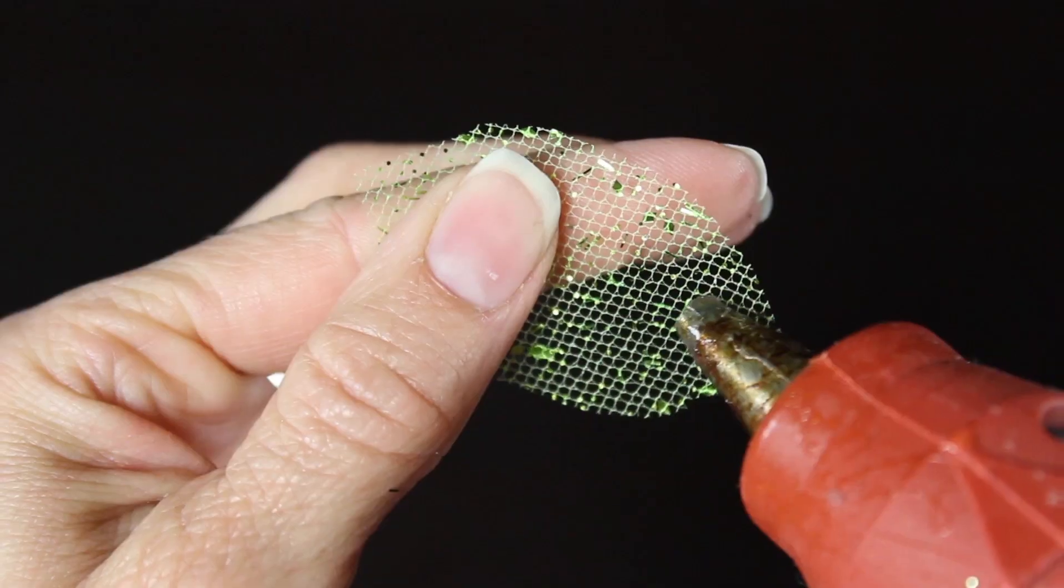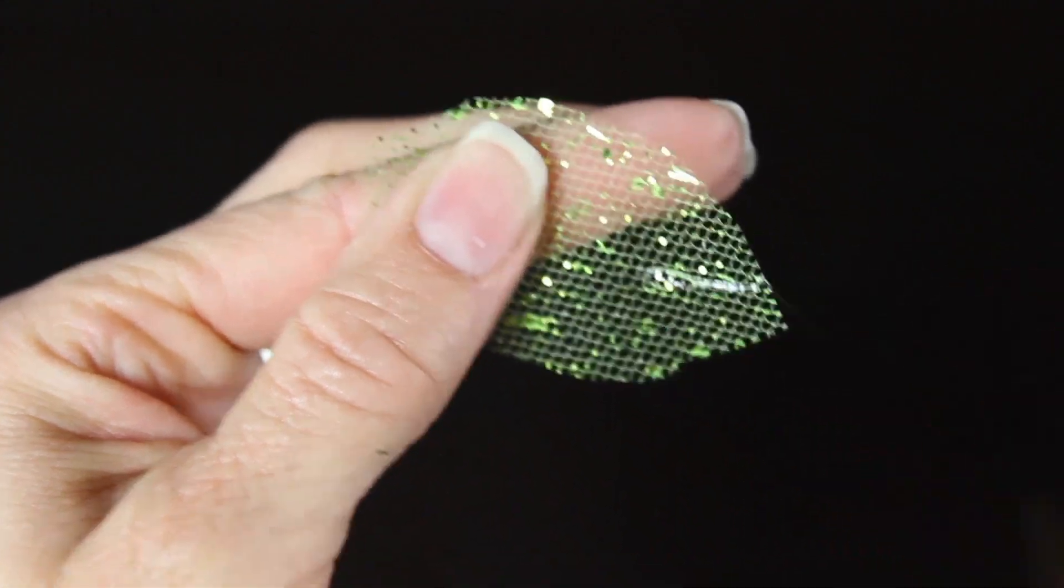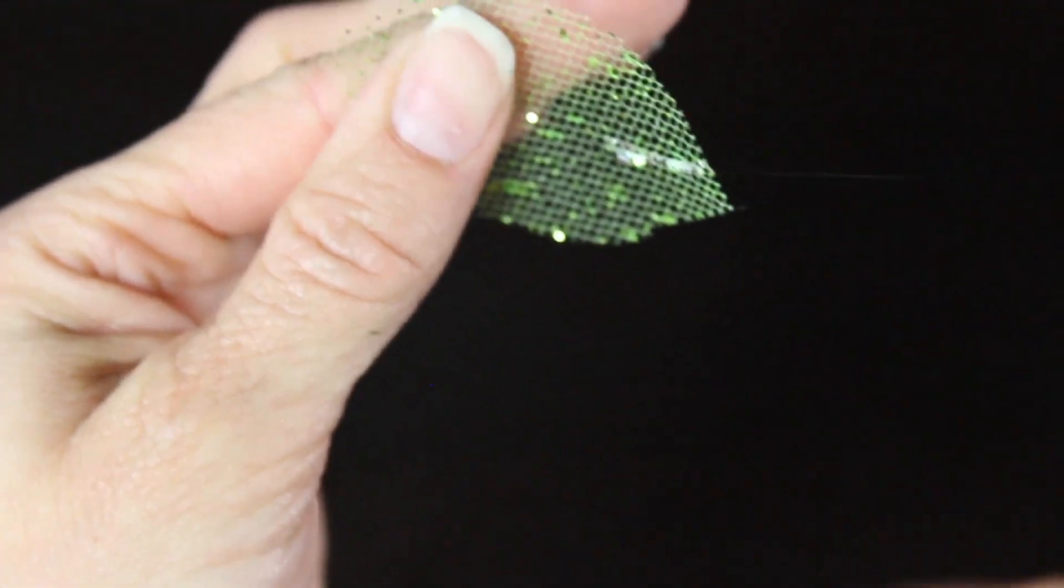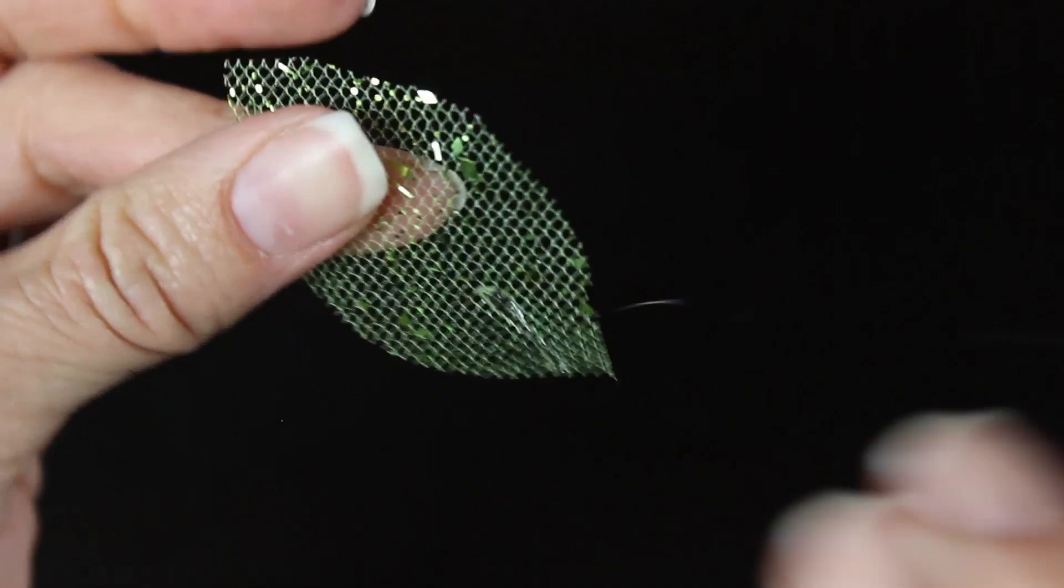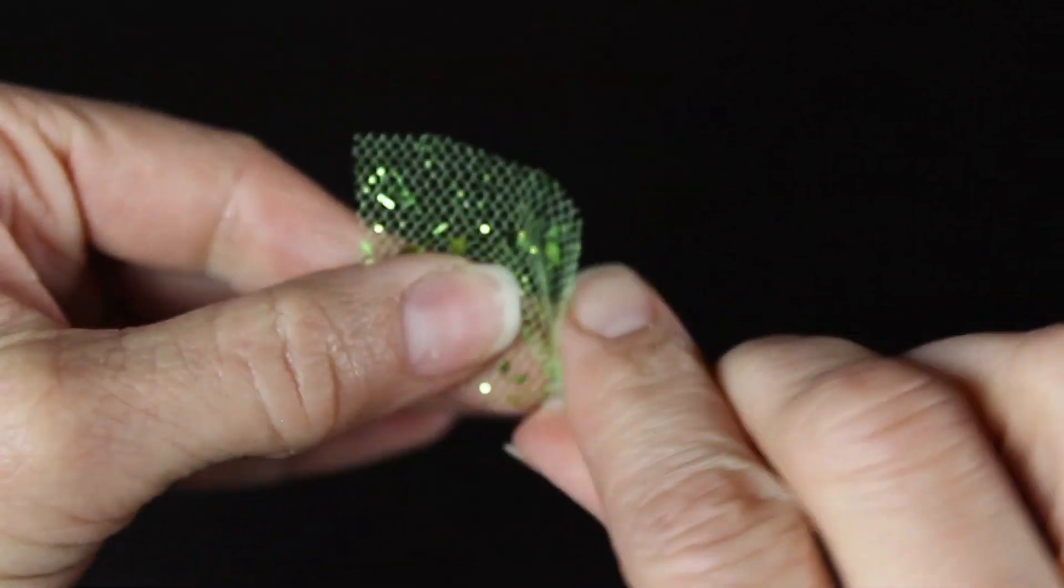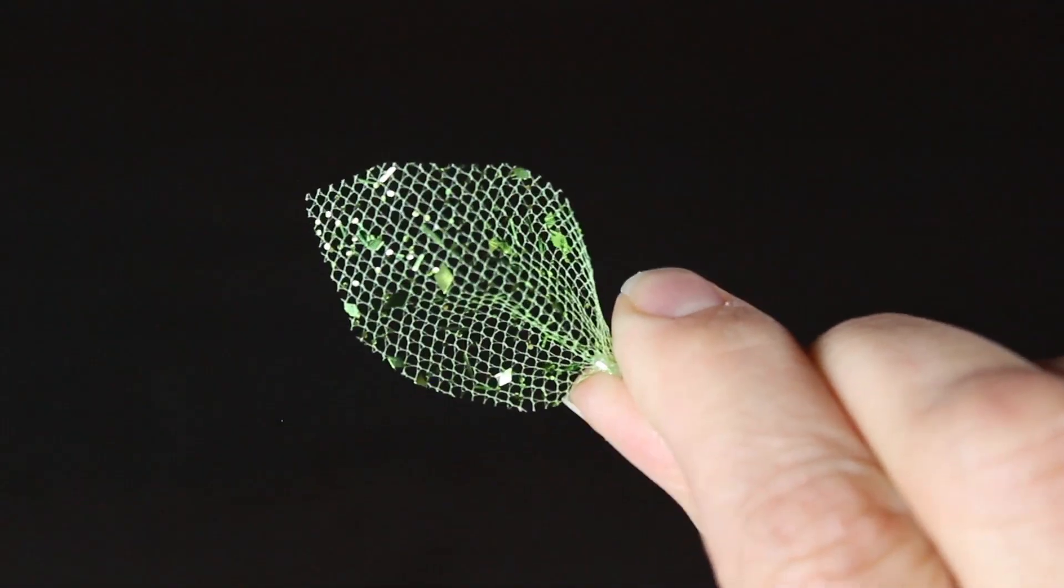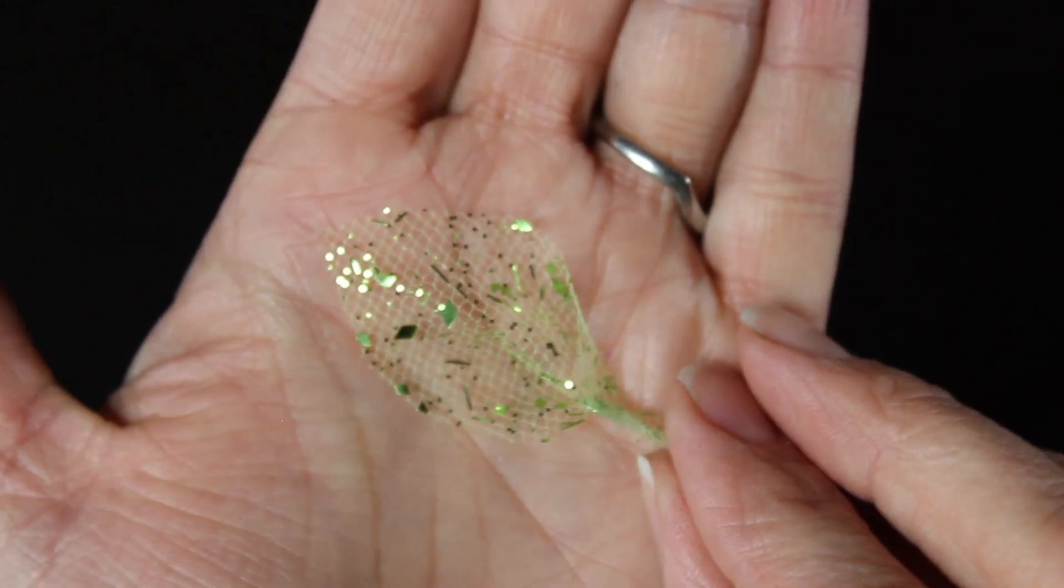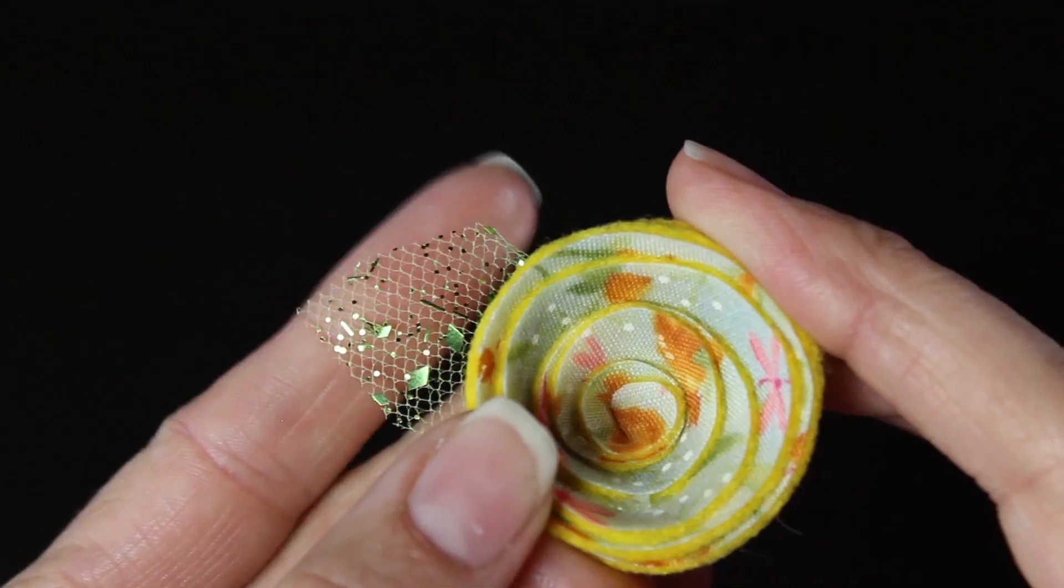Then just put a small dab of glue right at the end of your leaf. Flip it over and kind of pinch where the glue is. I let my glue set for just a second so when I pinch it it doesn't burn my finger. So be careful on that part. And you can see when I stick it right behind the flower it just looks really sweet.